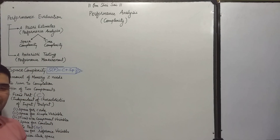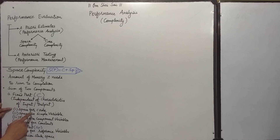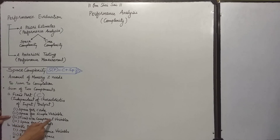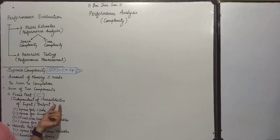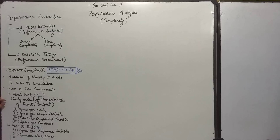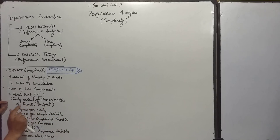The fixed part itself consists of four different parts: space for code, space for simple variables, space for fixed-size component variables, and space for constants. The fixed part is independent of the instance characteristics, that is, the number and size of the input and output parameters.